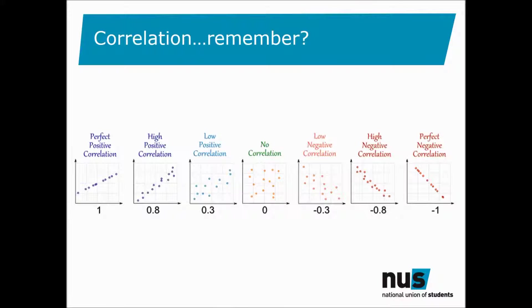R is always between minus 1 and 1, with minus 1 representing a perfect negative correlation, and 1 representing a perfect positive correlation. The nearer R is to 0, the less association there is between the two variables.